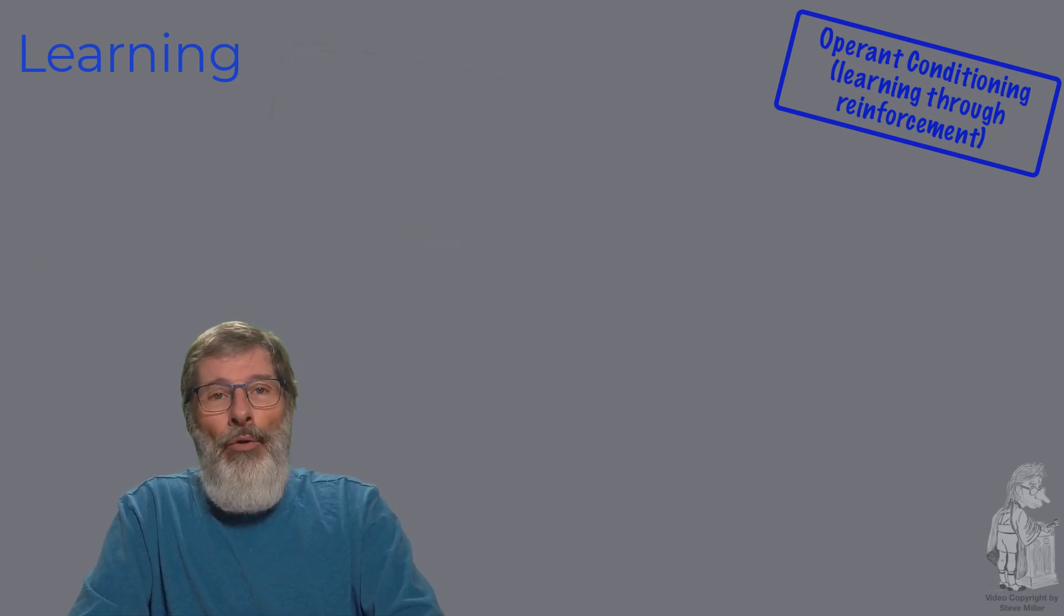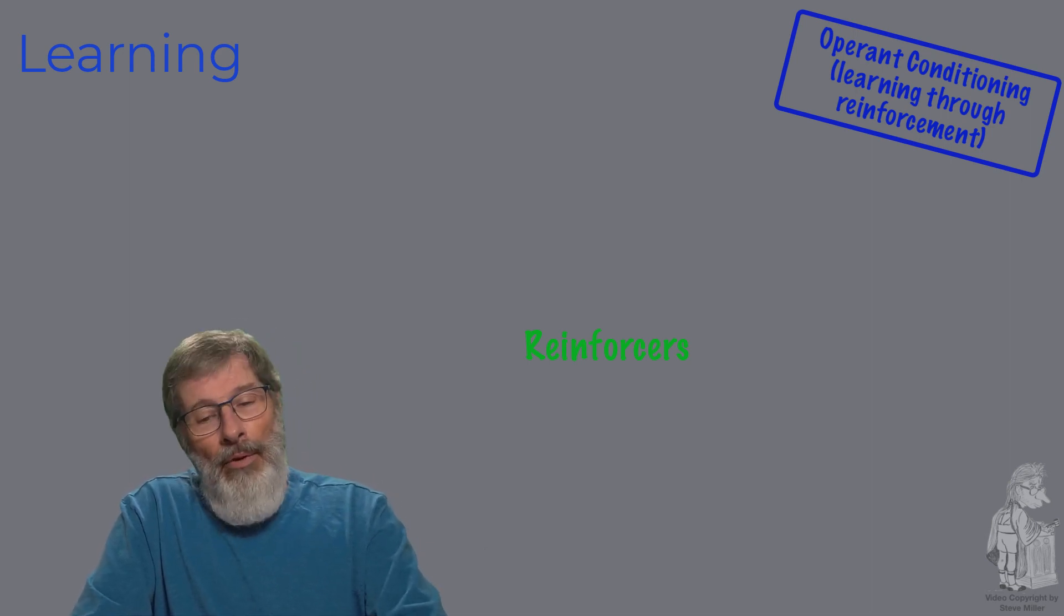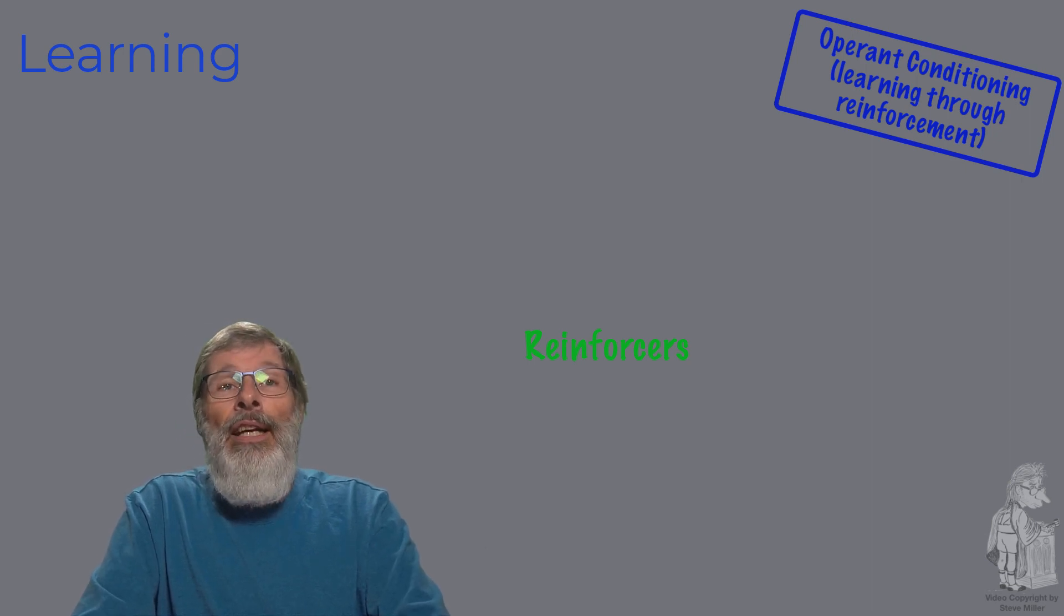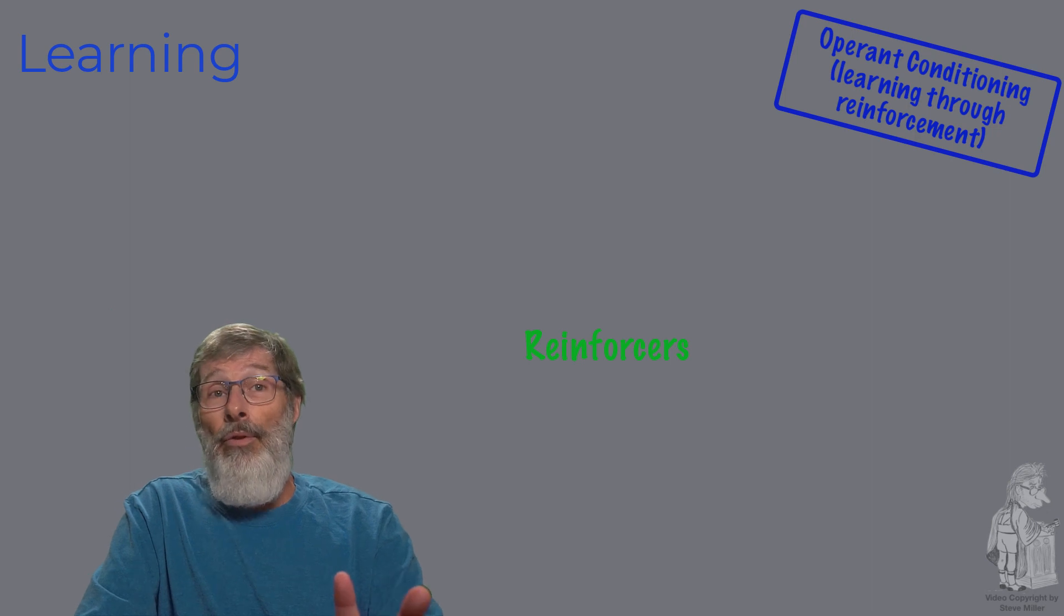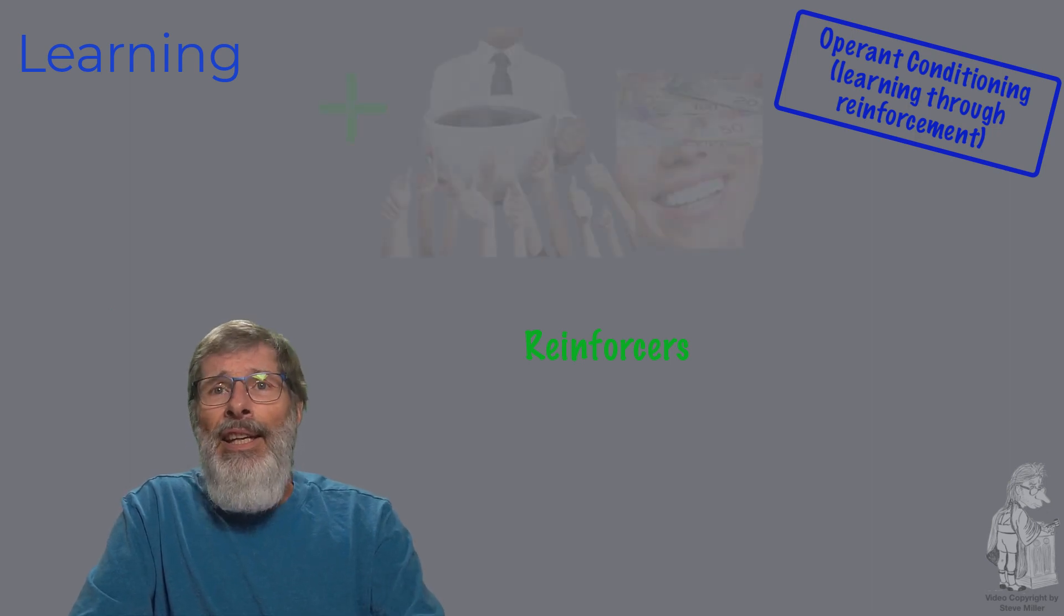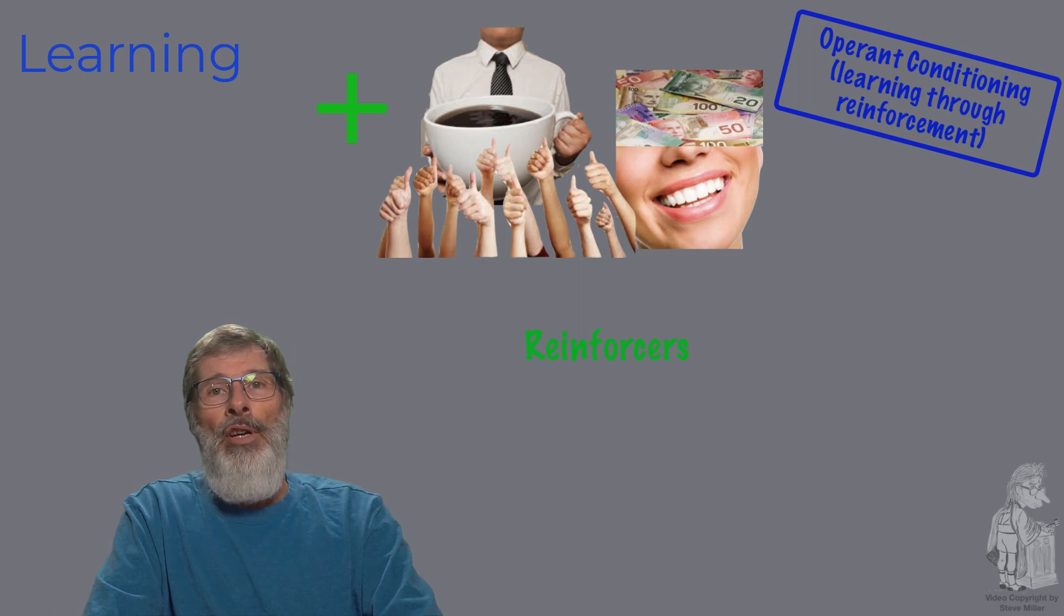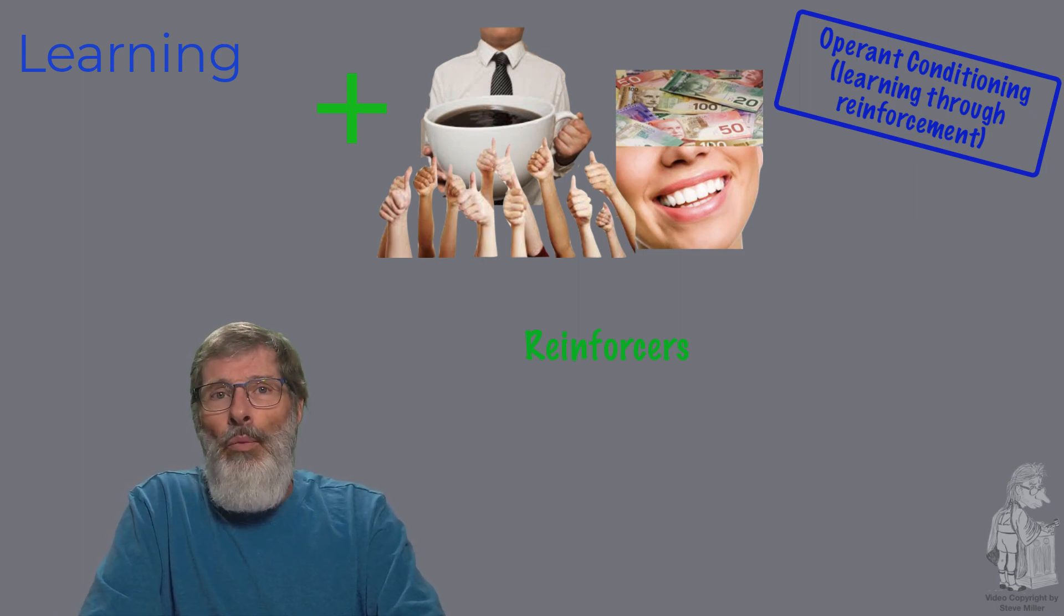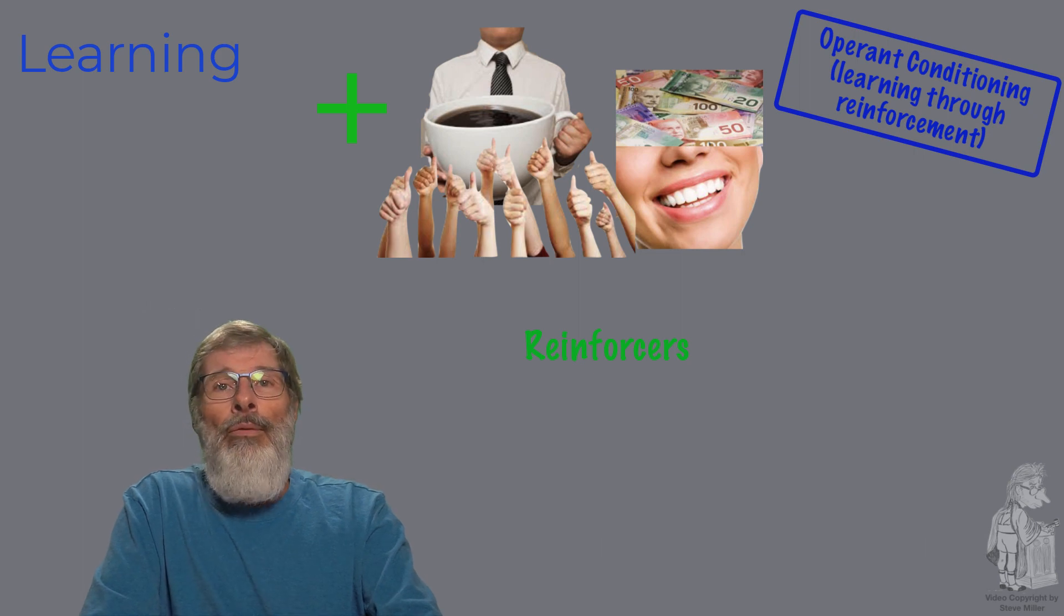Let's look at the types of reinforcers. Any stimulus that increases the probability that a response will be repeated. A positive reinforcement is anything that increases the likelihood that a behavior is going to be repeated. But there are two kinds of reinforcers, positive and negative reinforcers. Positive, any pleasant or desirable consequence that follows a response and increases the probability that the response will be repeated. They are roughly the same as a reward. If you smile as you walk down the street, some people smile back at you and say nice things. If you want to smile at everyone as you were rewarded, reinforced, and therefore increase the likelihood that you'll do it again.